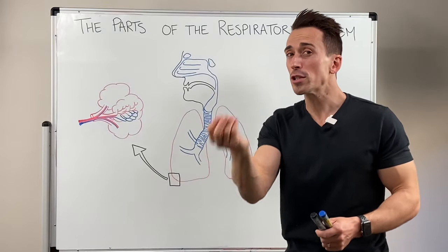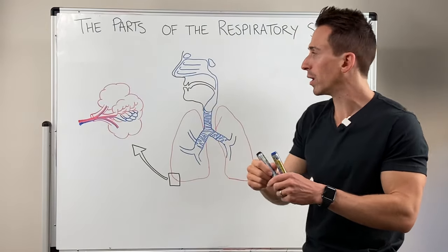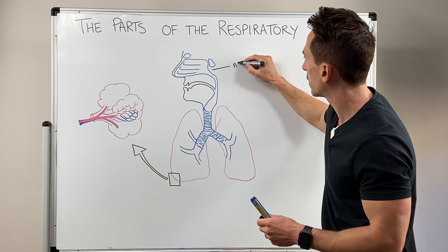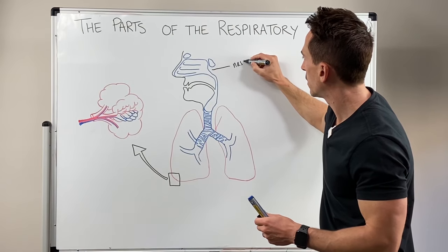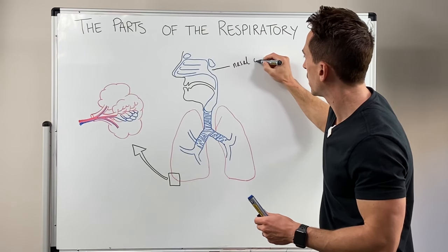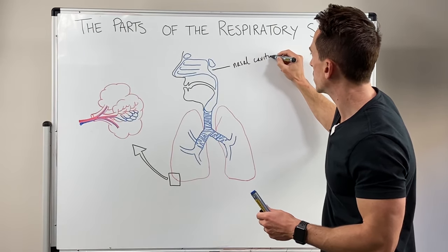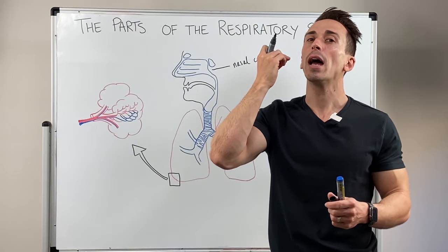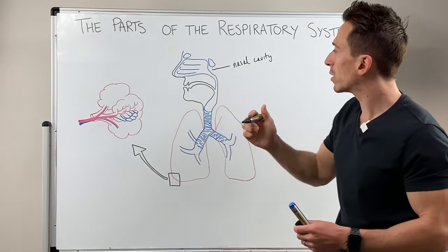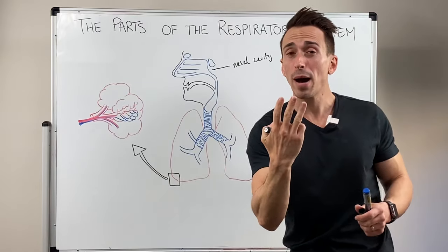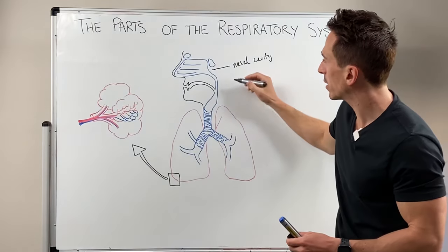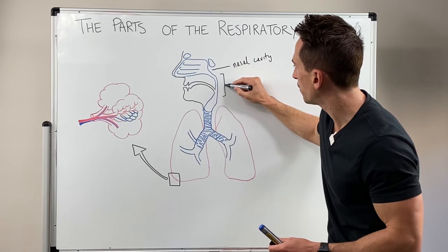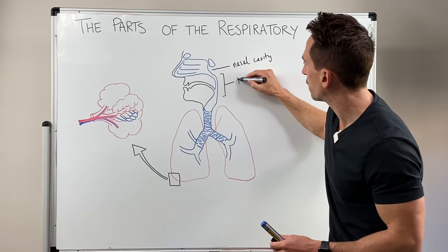First of all, when air is first inspired it enters something called the nasal cavity. Now once it enters the nasal cavity it moves to the back of the throat, and that area we call the pharynx. There are actually three parts to the pharynx, and I'm going to highlight this entire area here as the pharynx.